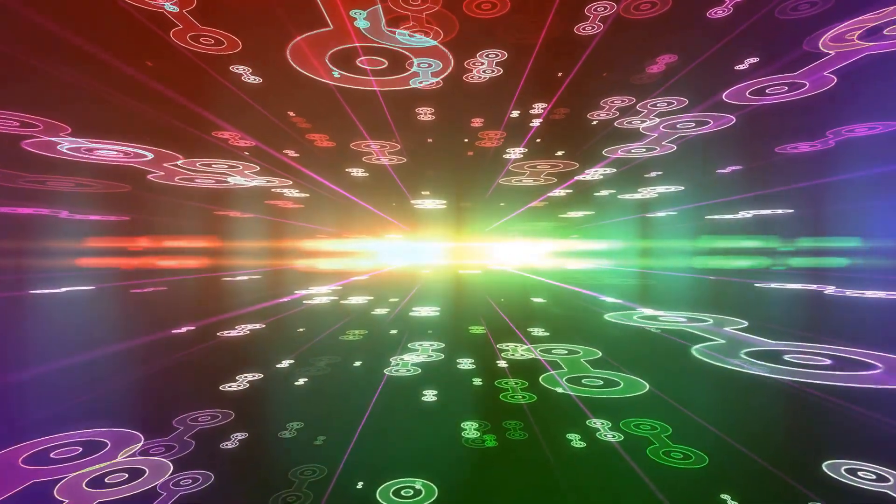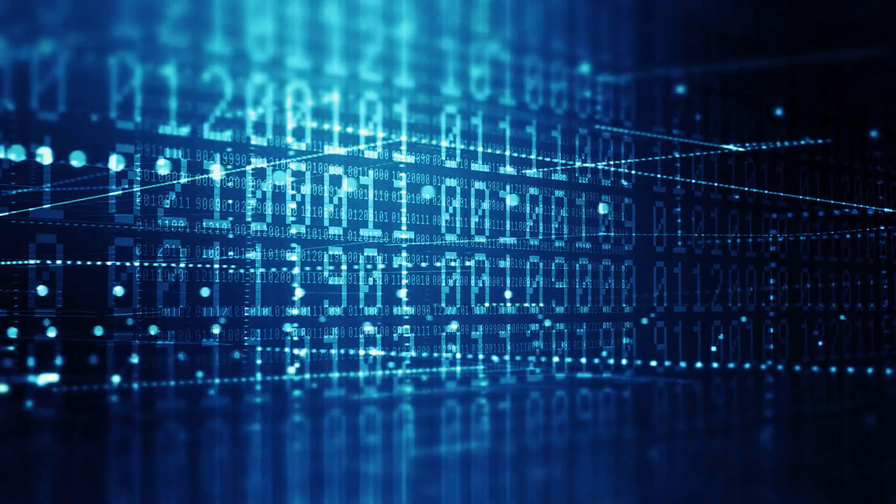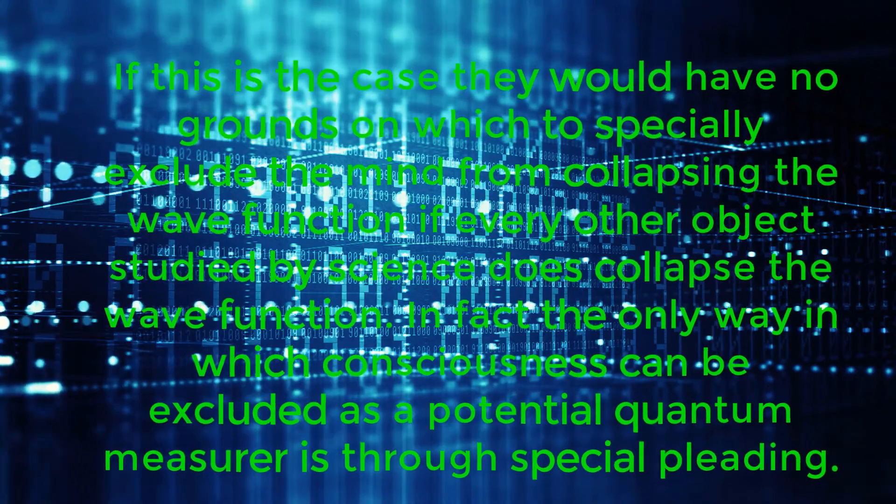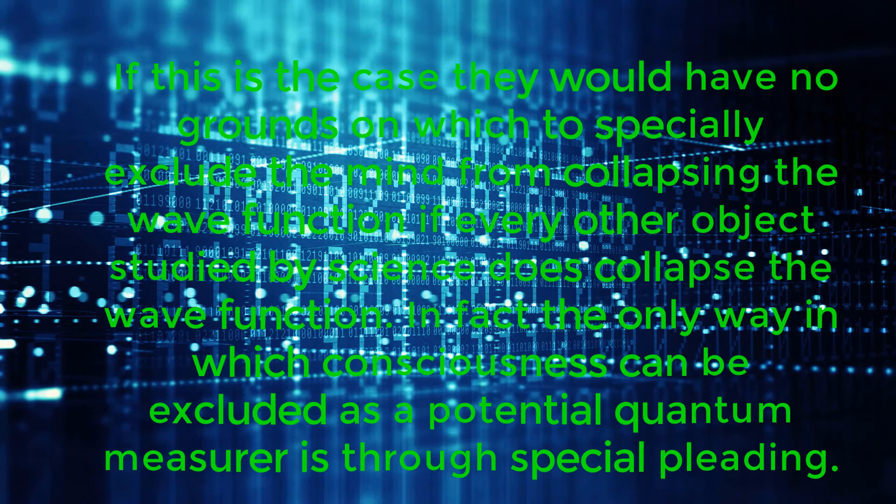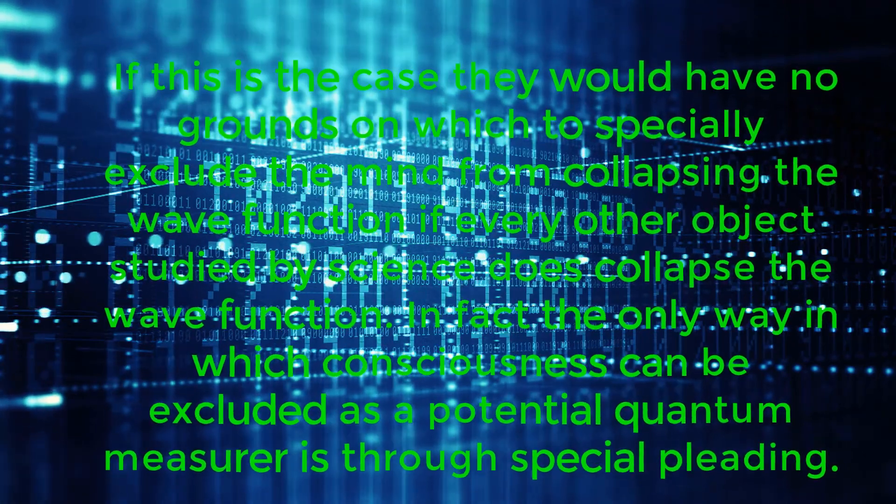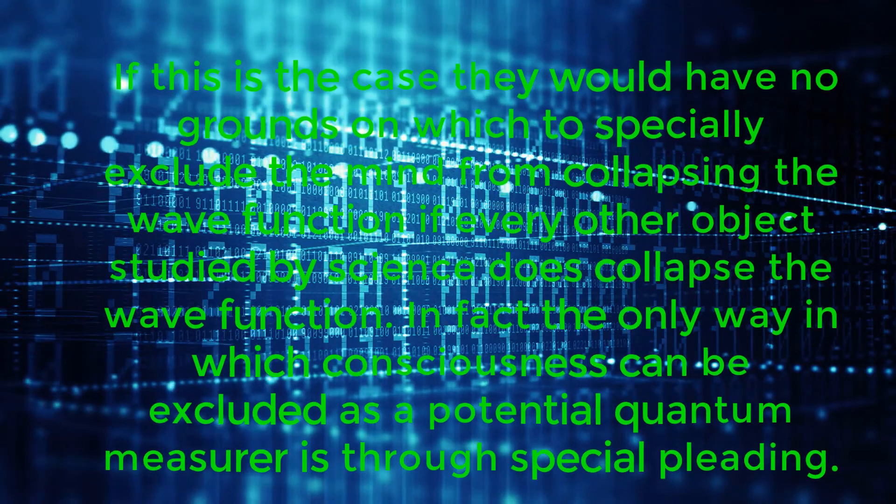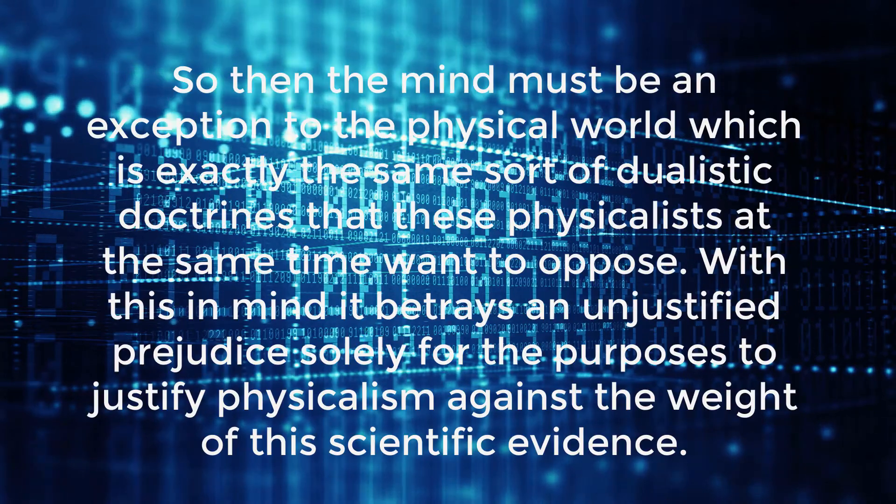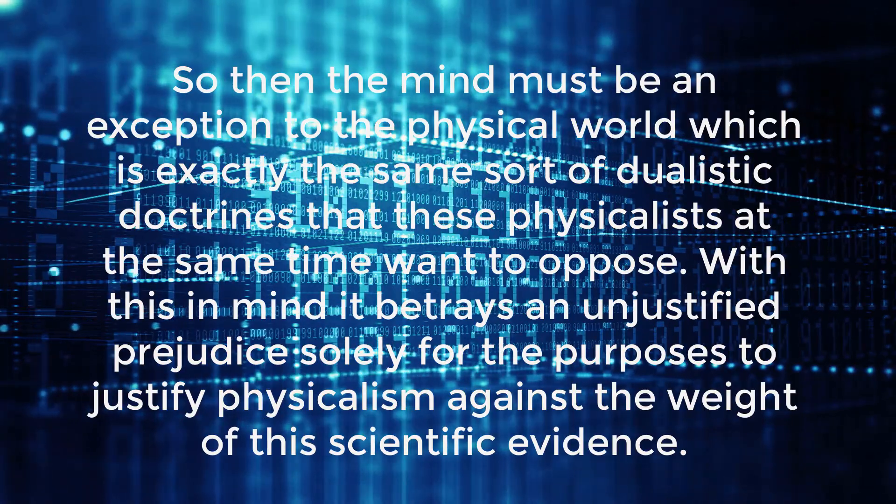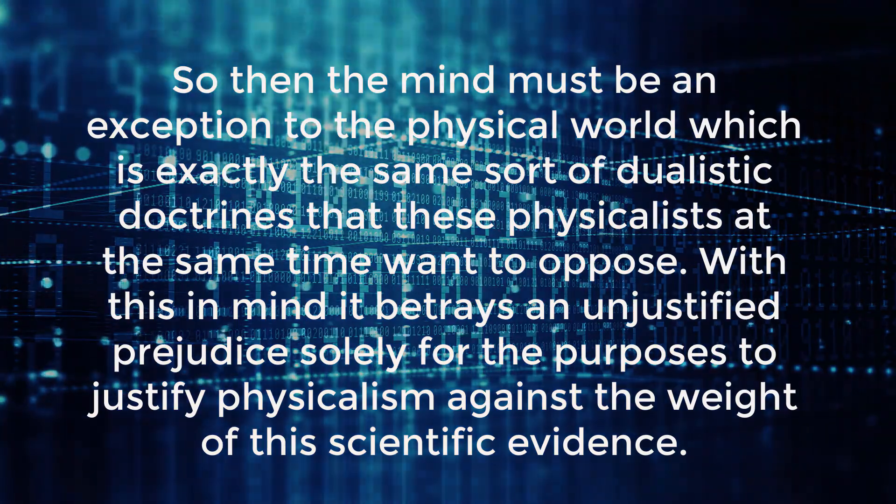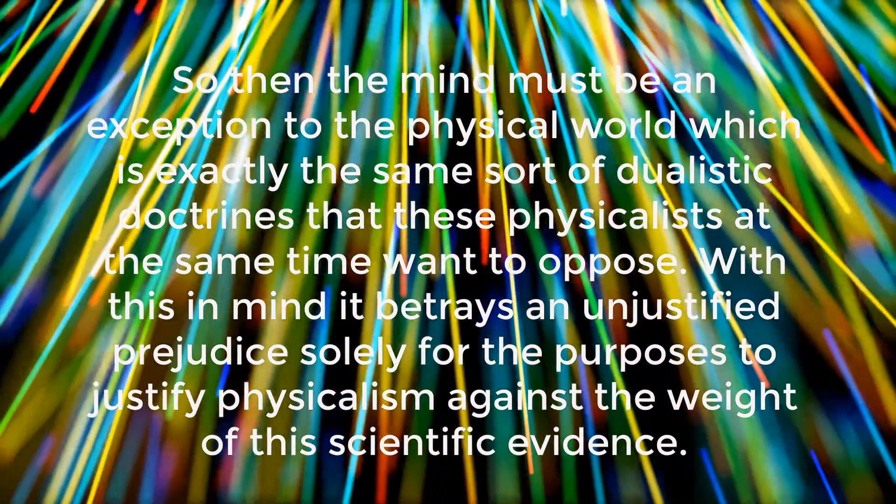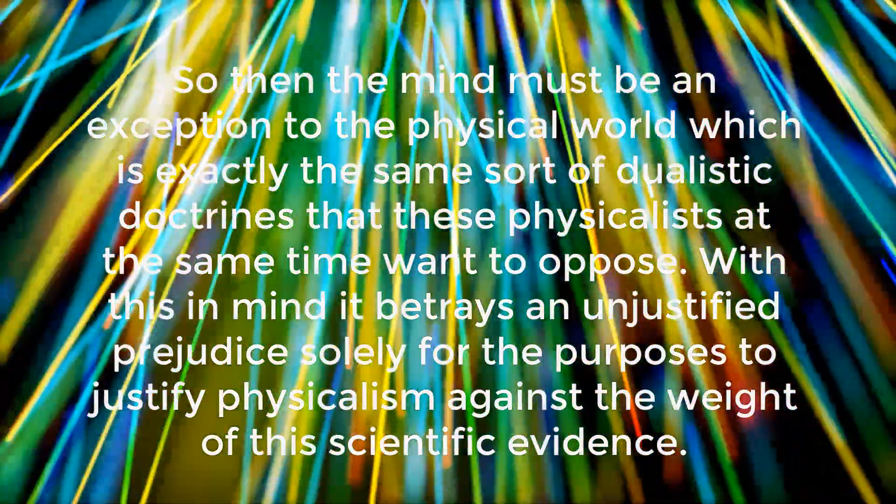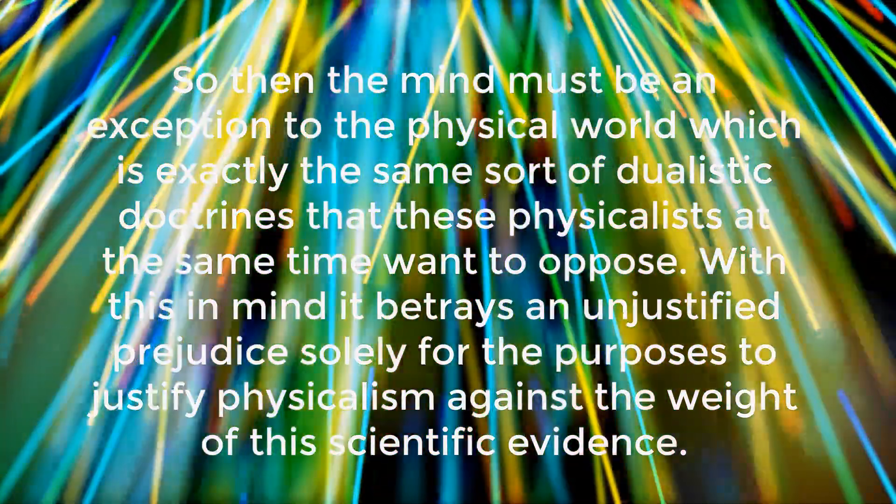The sort of physicalists who make these claims also reject the notion that the mind is anything beyond science. However, if this is the case, they would have no grounds on which to specially exclude the mind from collapsing the wave function if every other object studied by science does collapse the wave function. In fact, the only way in which consciousness can be excluded as a potential quantum measurer is through special pleading. So then, the mind must be an exception to the physical world, which is exactly the sort of dualistic doctrines that these physicalists at the same time want to oppose. With this in mind, it betrays an unjustified prejudice solely for the purposes of justifying physicalism against the weight of the scientific evidence.